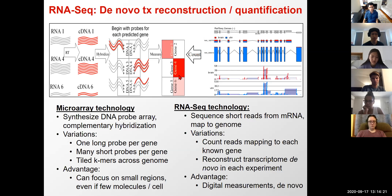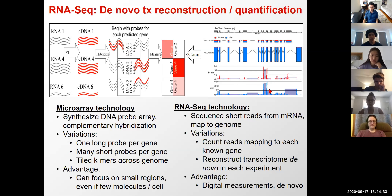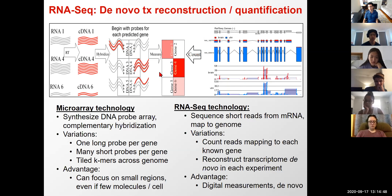The advantage of microarray technology is that it allows you to focus on specific small regions you care about, even if they have very few molecules per cell. The revolution of next-generation sequencing over the last ten years has superseded microarray technology, which came at a time when sequencing was very expensive — so you'd synthesize your array once and hybridize, which is very cheap once you've mass-produced the arrays.